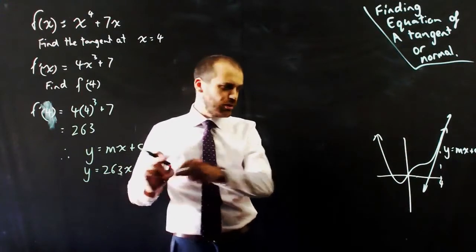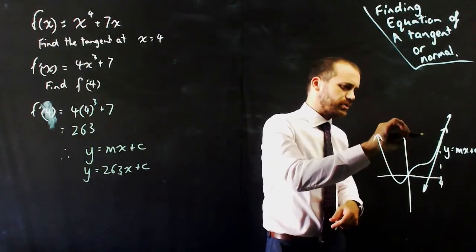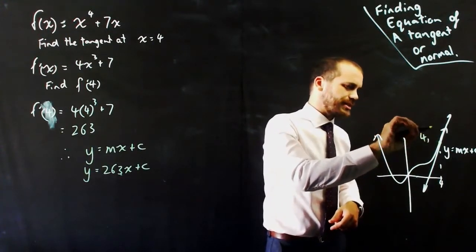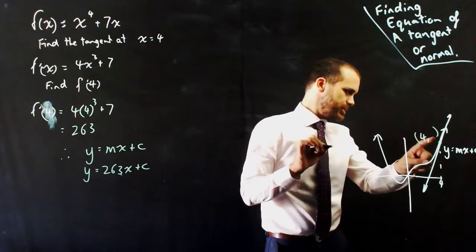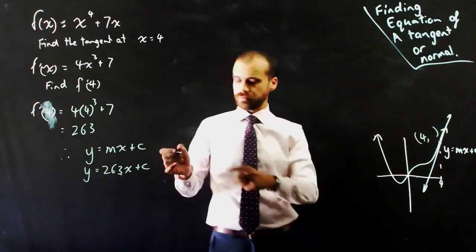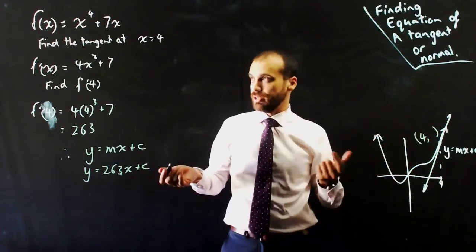Now, to find the c value, I just need to know a point on that line. I know that the tangent is occurring at 4 something. I just need to know what the something is.